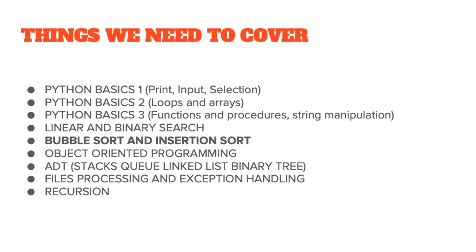Sorting algorithms can reduce the complexity of a problem and often have direct applications in searching algorithms, database algorithms, and data structures. Different types of algorithms can be compared based on time complexity, whether they are stable, how many comparisons happen, how many swaps are required, and so forth — all of that can be covered as part of big O notation. However, we're just going to be focusing on the coding of these algorithms in this lesson.